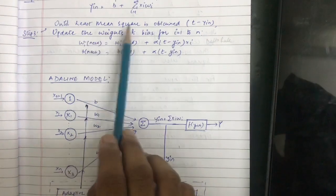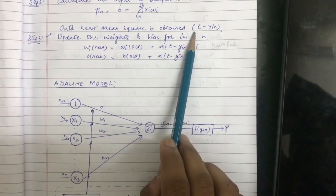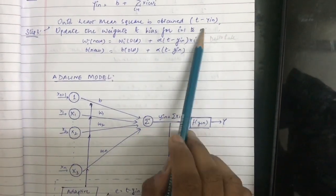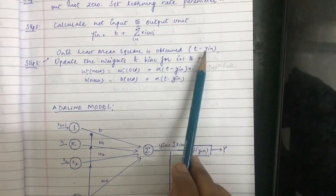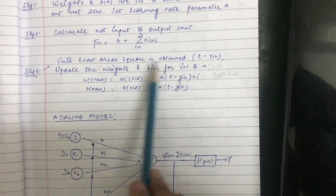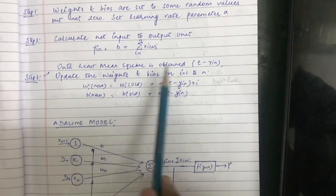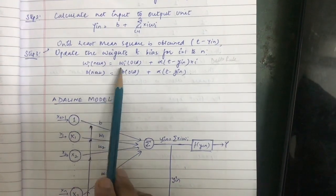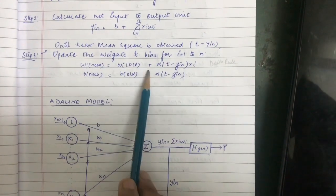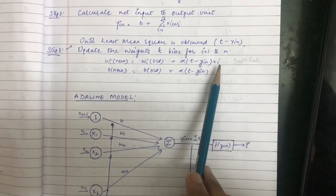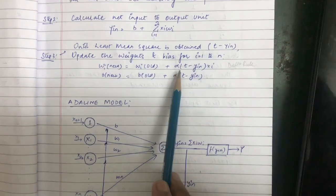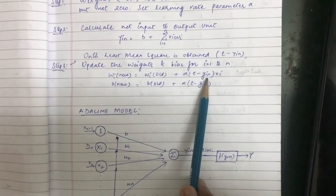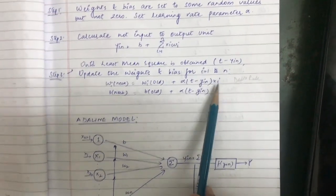Step three is to update the weights and bias for i equal to 1 to n until least mean square is obtained. The least mean square is t minus y_in — the numerical value of t minus y_in is known as the error value. The weight update rule is: w_i(new) = w_i(old) + alpha * (t − y_in) * x_i, where alpha is the learning rate, t is the desired output, y_in is the net input to the output neuron, and x_i is the input vector.